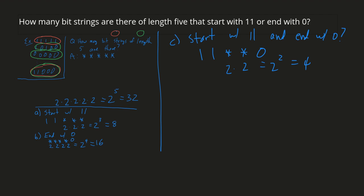To answer the final question — how many bit strings of length 5 start with 1,1 or end with 0 — it would be the number that start with 1,1, which is 8, plus the number that end with 0, which is 16, minus the number that start with 1,1 and end with 0, because I have double counted those, which is 4. So it's 8 plus 16 minus 4, which is 20.